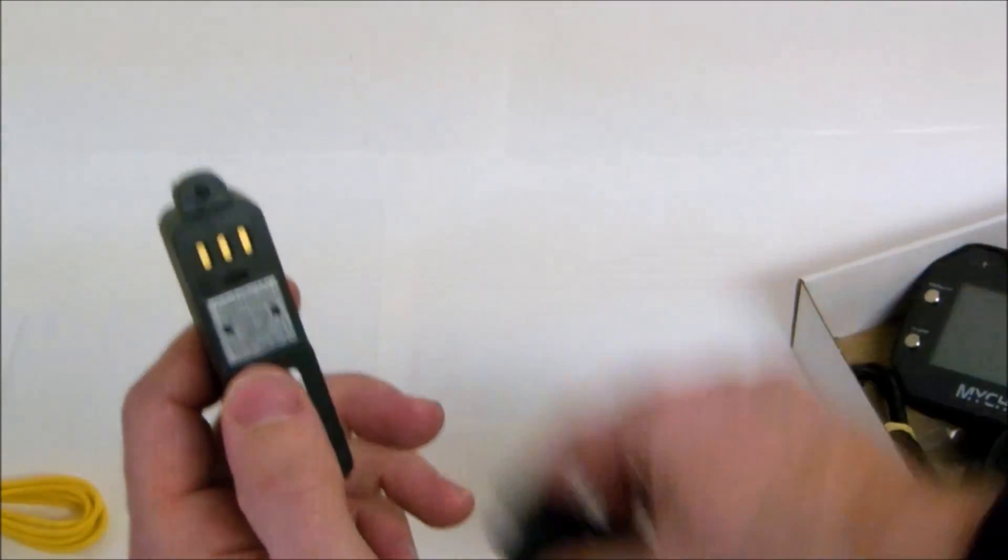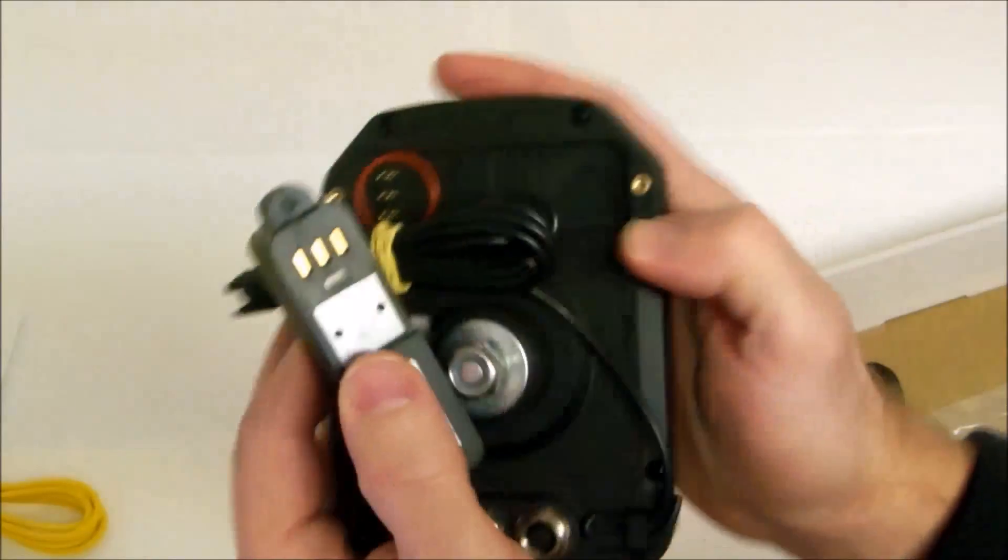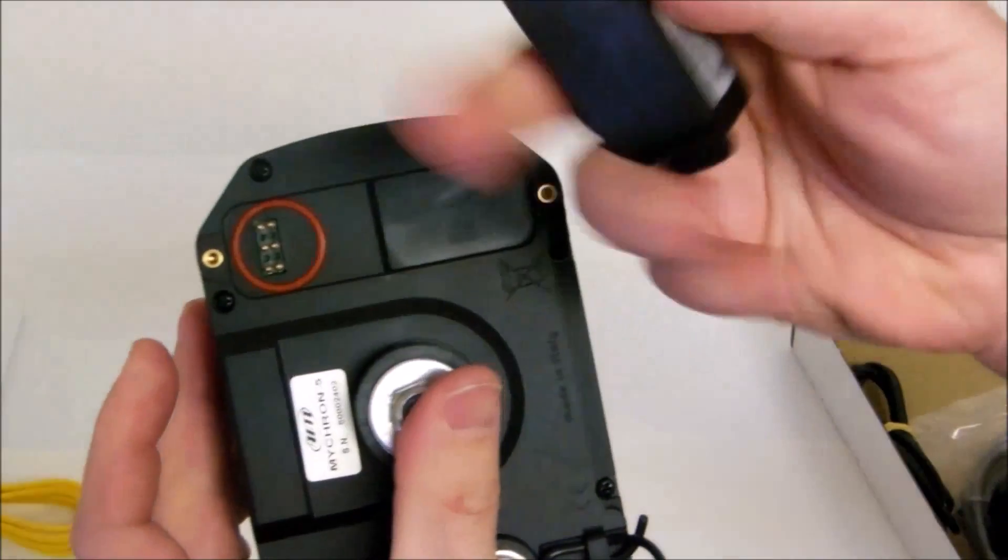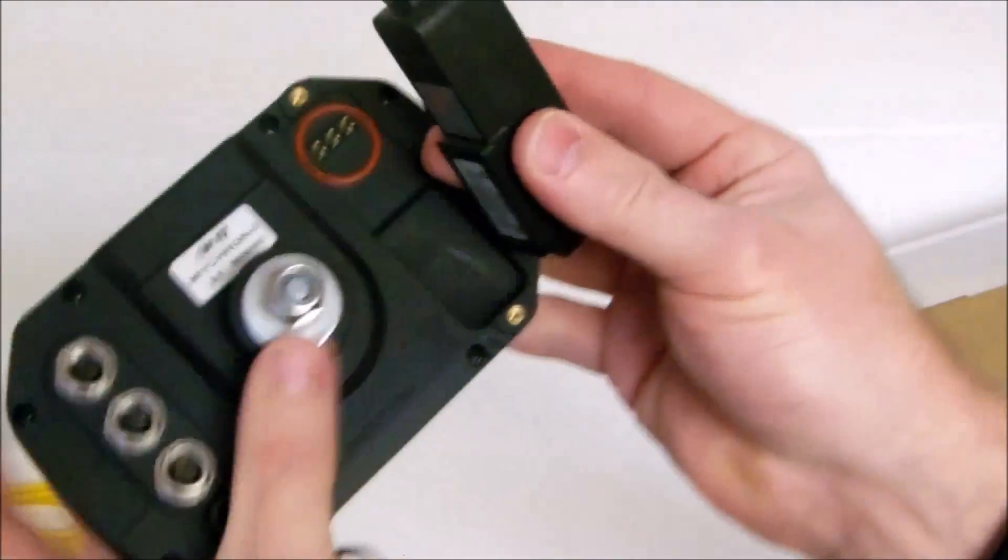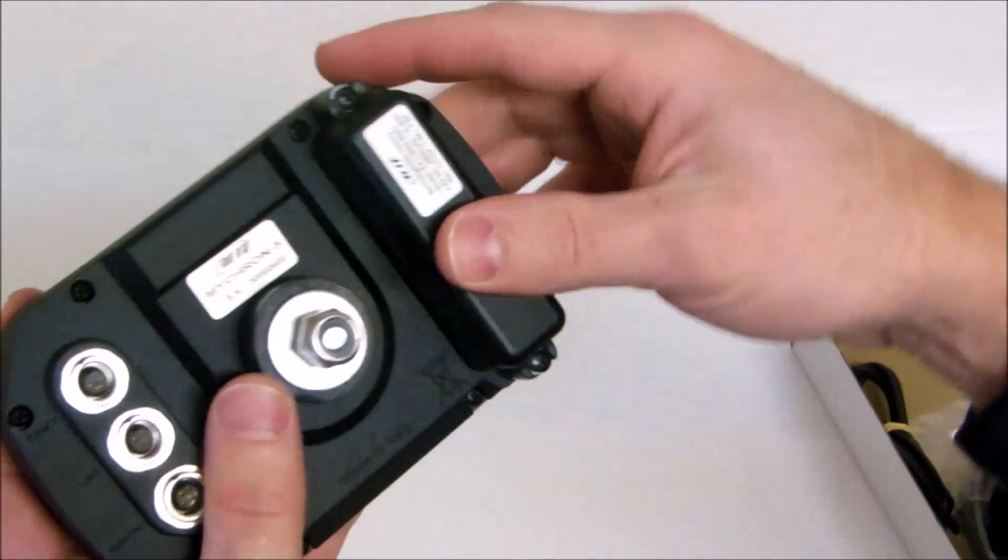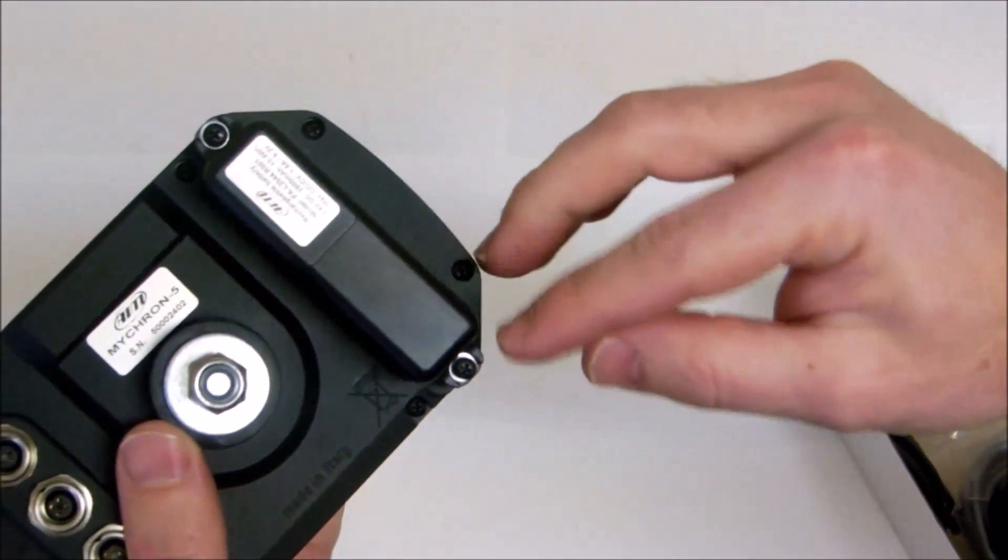Here is a closer look at the rechargeable battery. This battery is magnetically connected. It snaps right into place. You tighten down a couple of screws just to keep it secure.